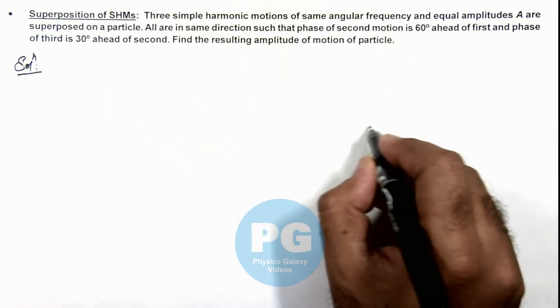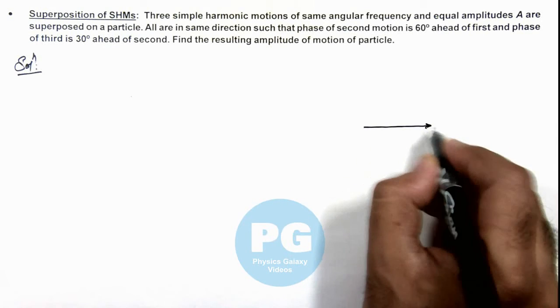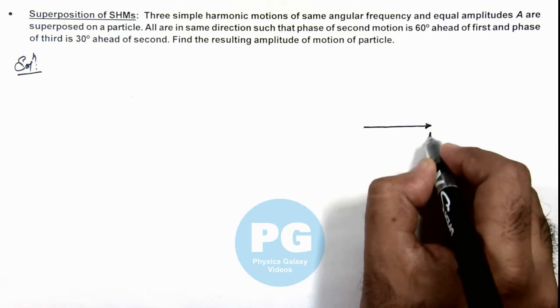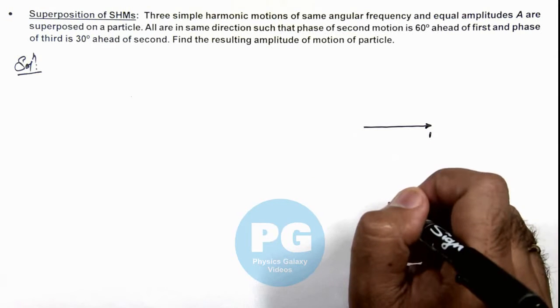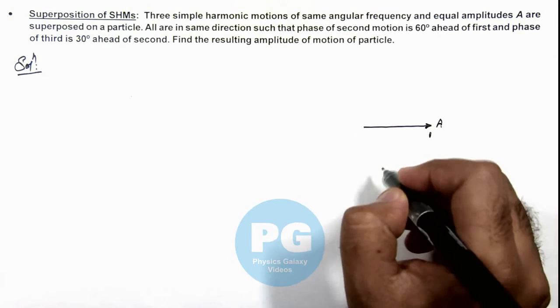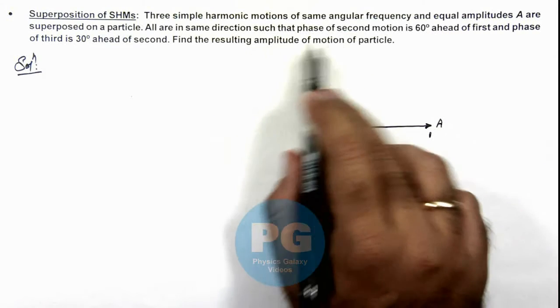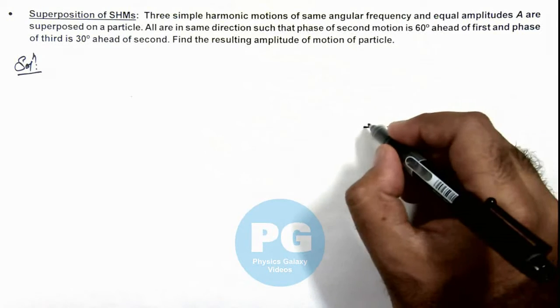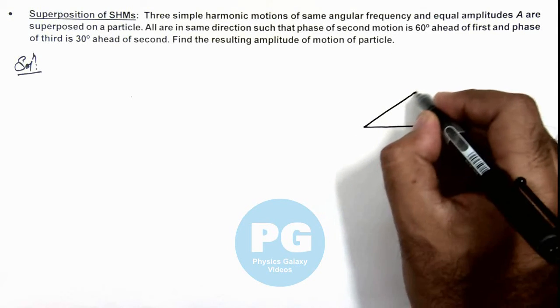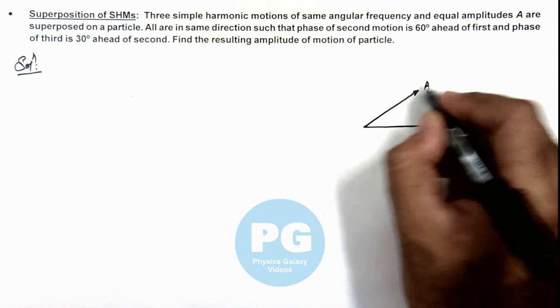So if we consider the first SHM is represented by an arrow at zero degree with amplitude A, then it is saying another SHM is at an angle 60 degree ahead of phase. So this will be SHM 2.